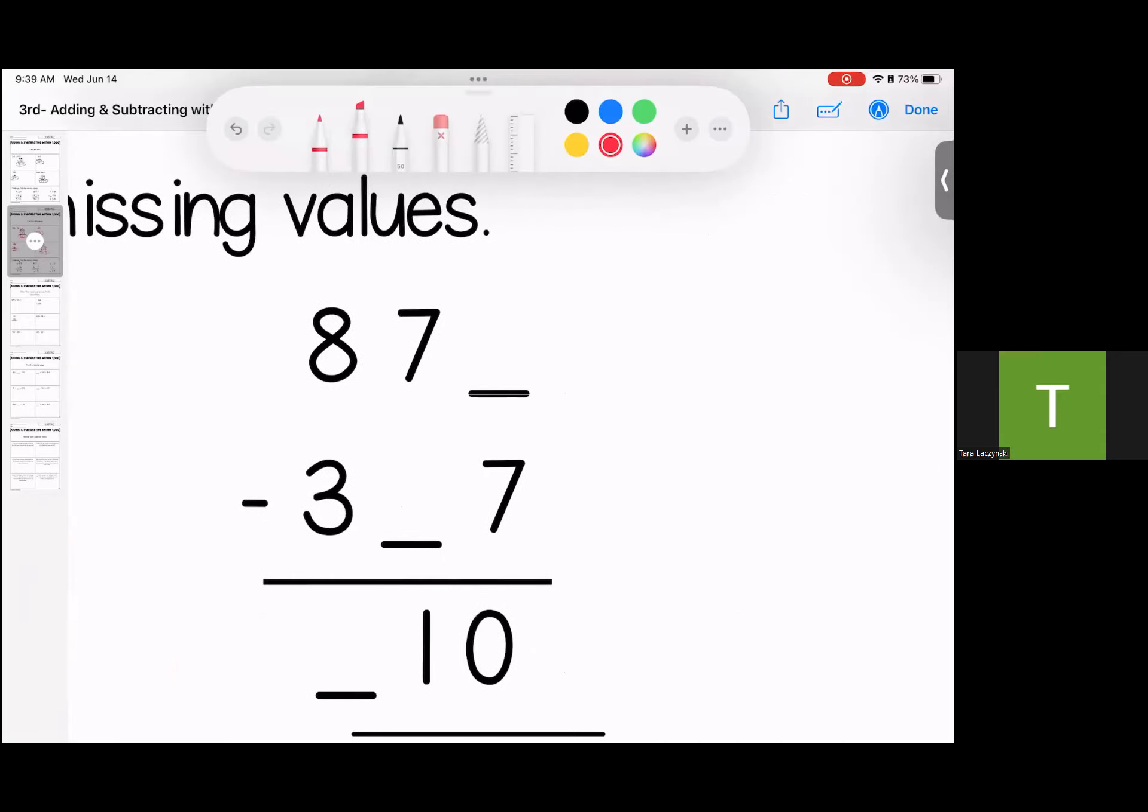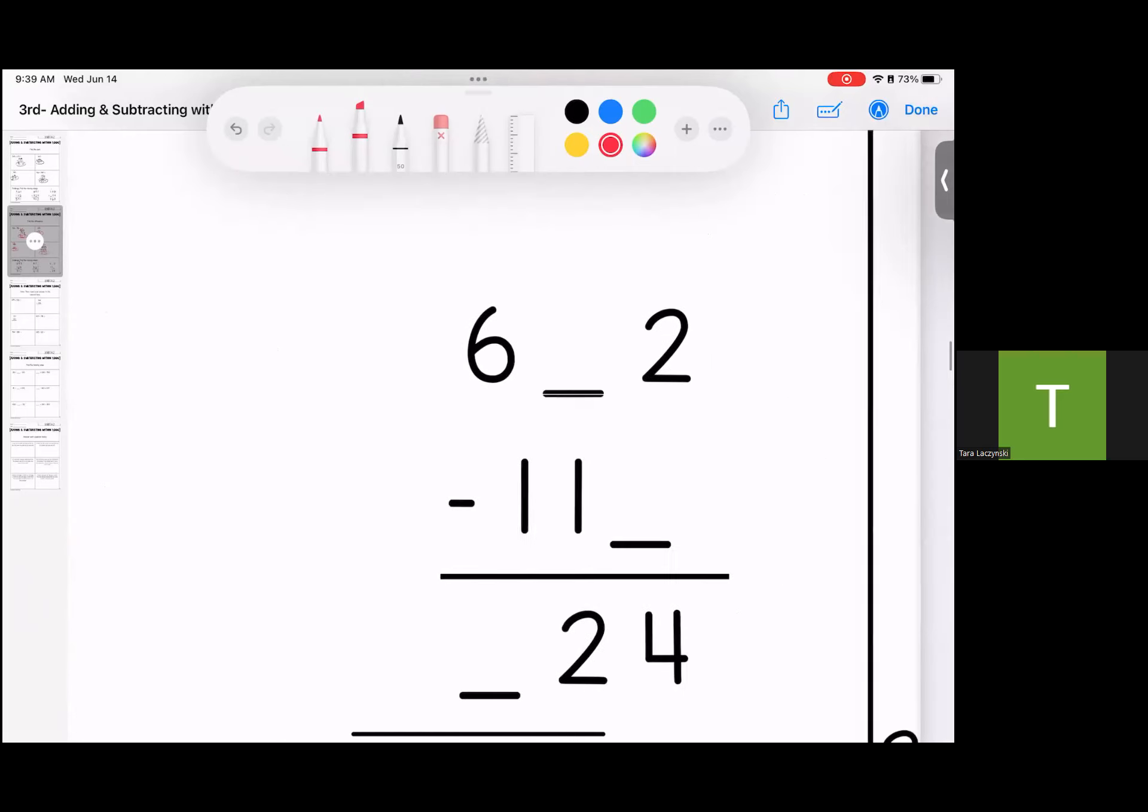Over here, 7 minus 7 gives me 0. 7 minus 6 gives me 1. And 8 minus 3 gives me 5. 877 minus 367 is 510.